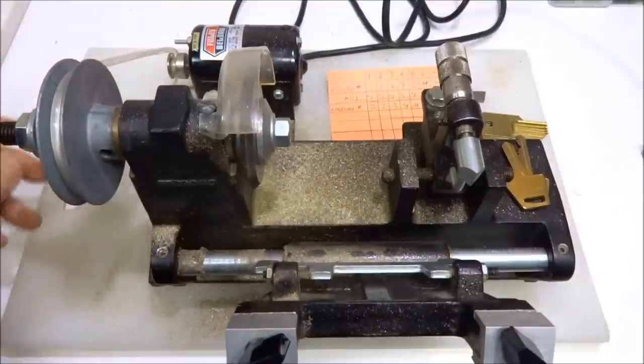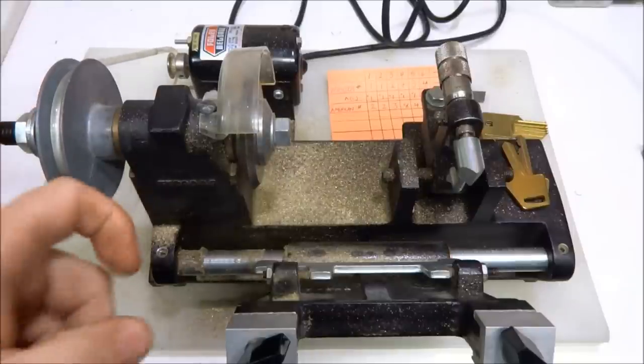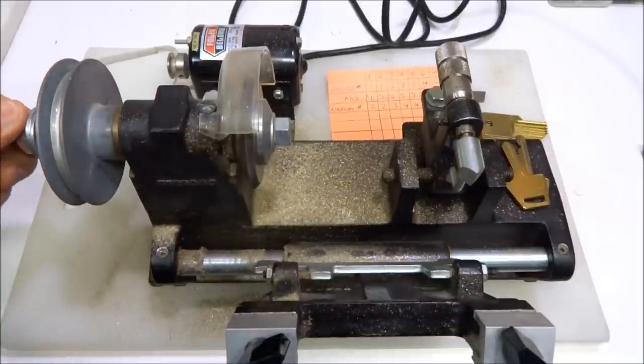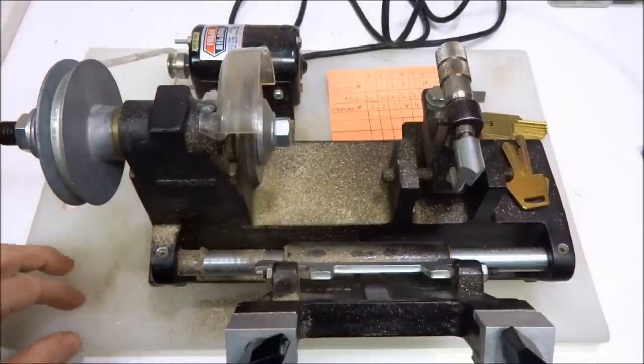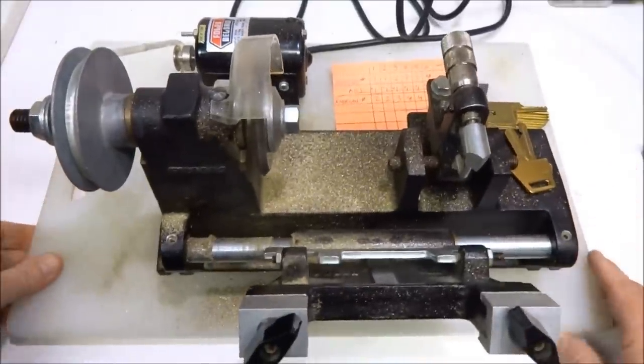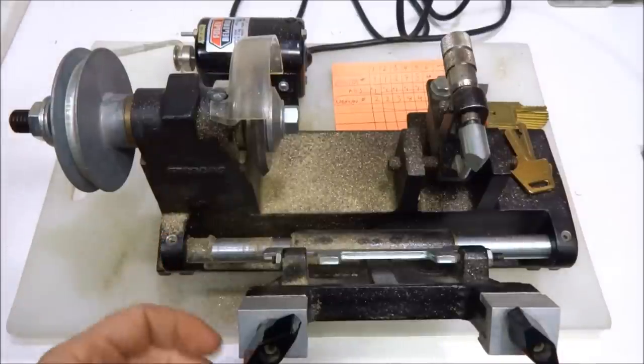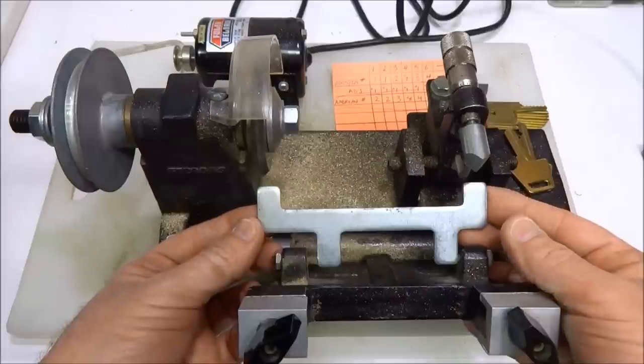This is what I upgraded to a couple of years ago. This is by a company called Foley Belsaw. They made these for the locksmith course advertised in magazines. When you signed up for that thousand dollar course, they sent you one of these key cutting machines. There's thousands of them out there. I got this one for $75 off eBay. It was still in the box when I got it.